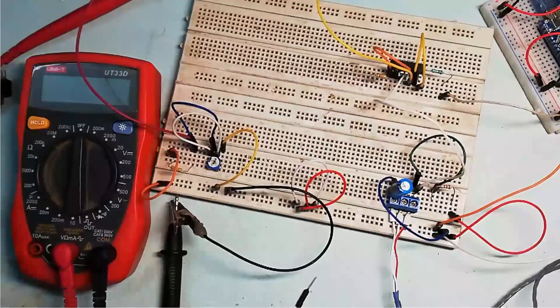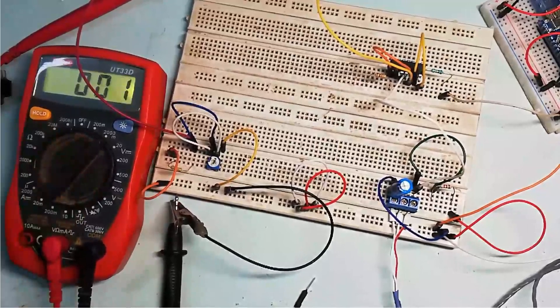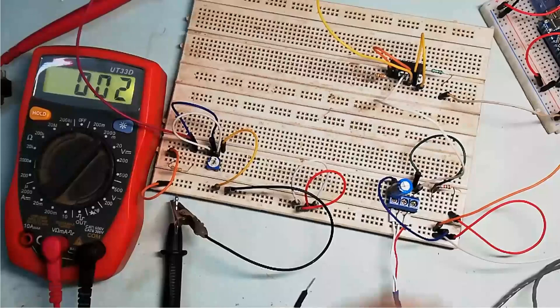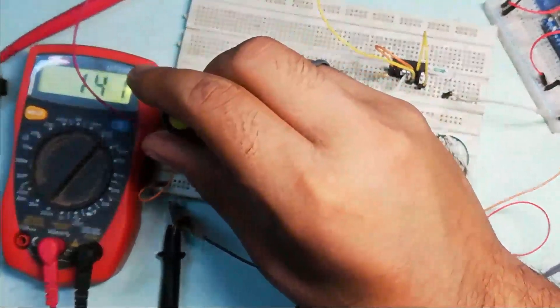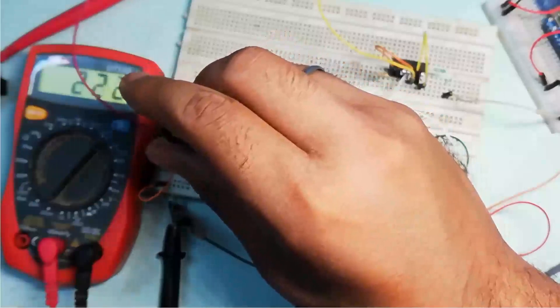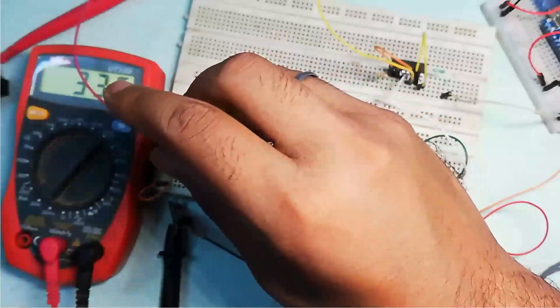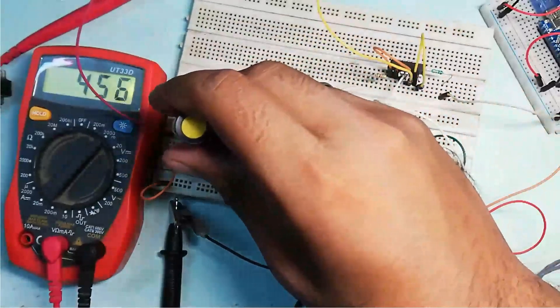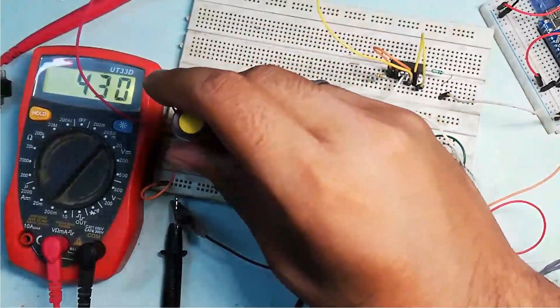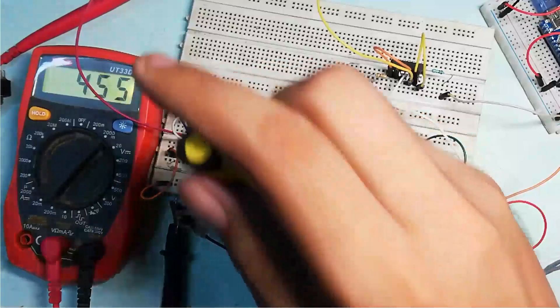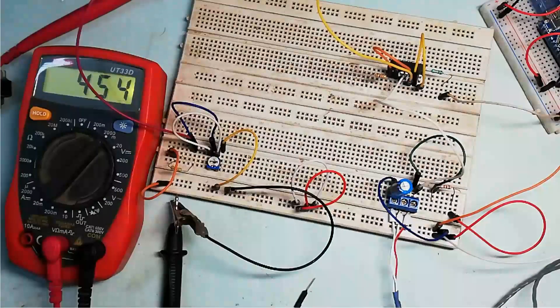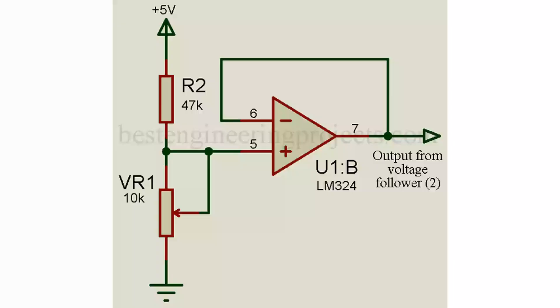Select the range of 2000 millivolt and adjust this variable resistor till we get 455 millivolt. As you can see here, we get 455 millivolt, that is 0.454 voltage. And as above, we are using another voltage follower circuit in order to avoid loading effect.